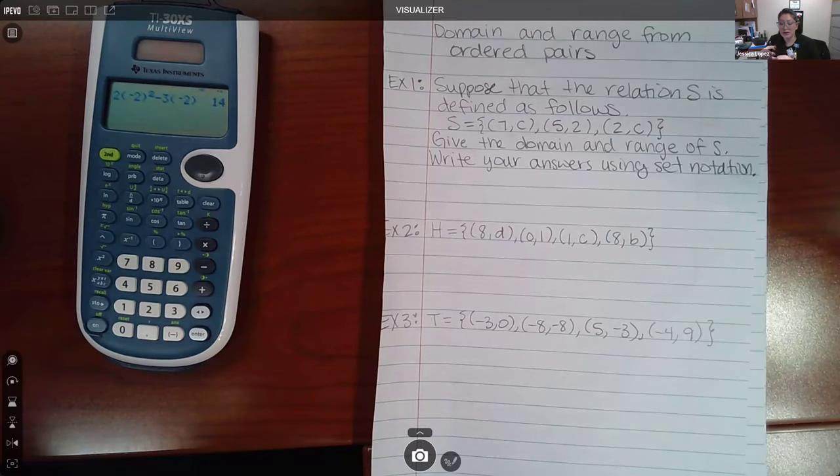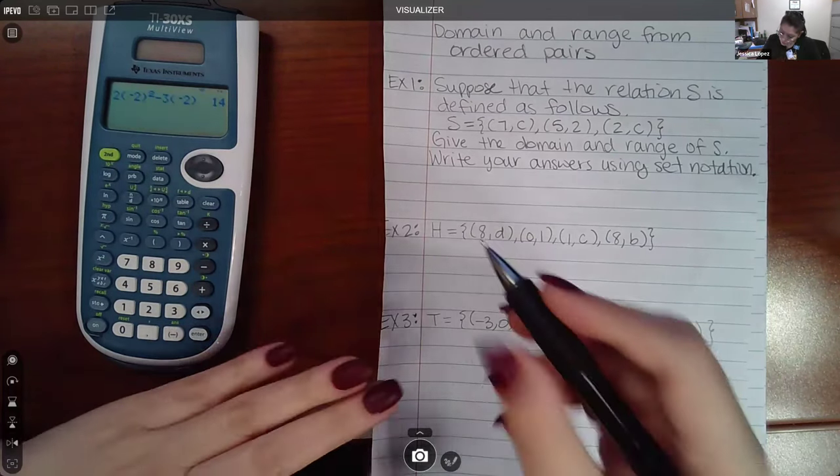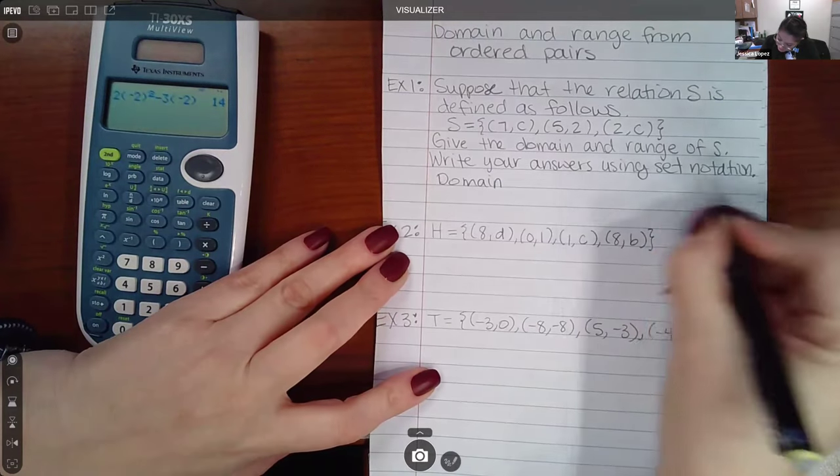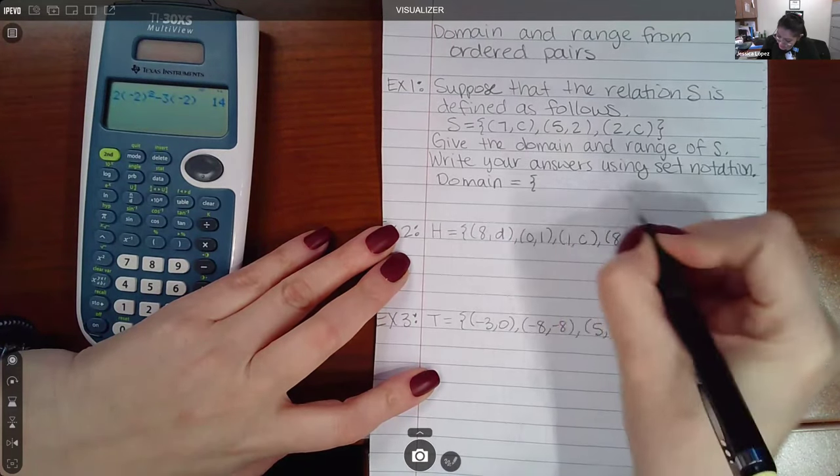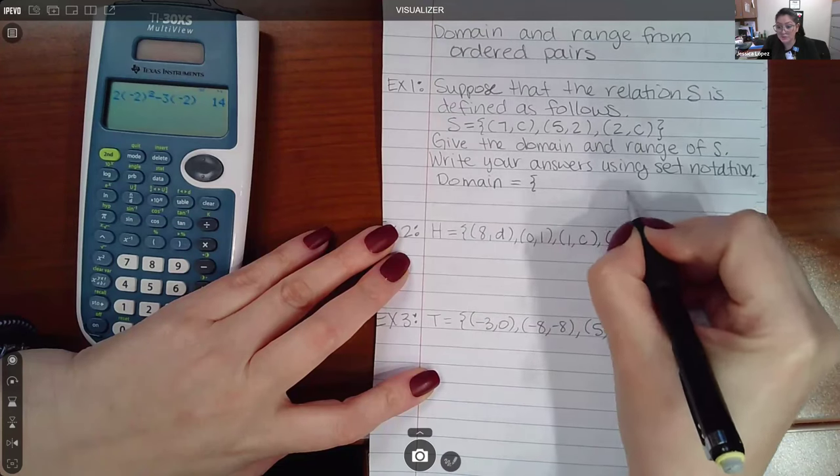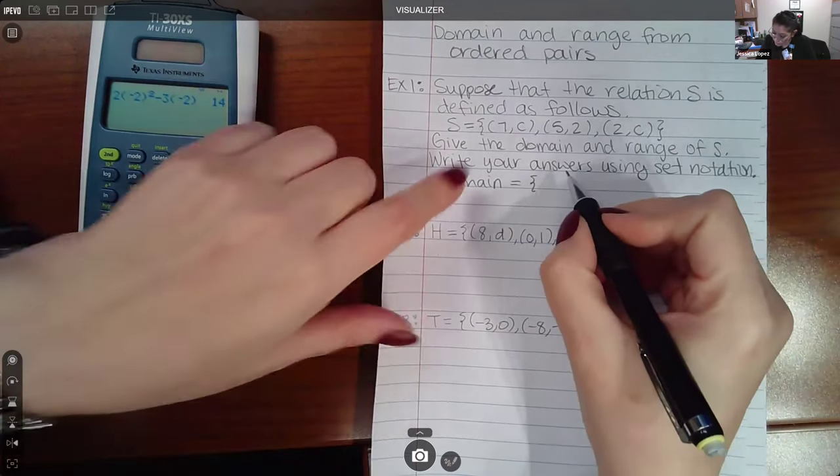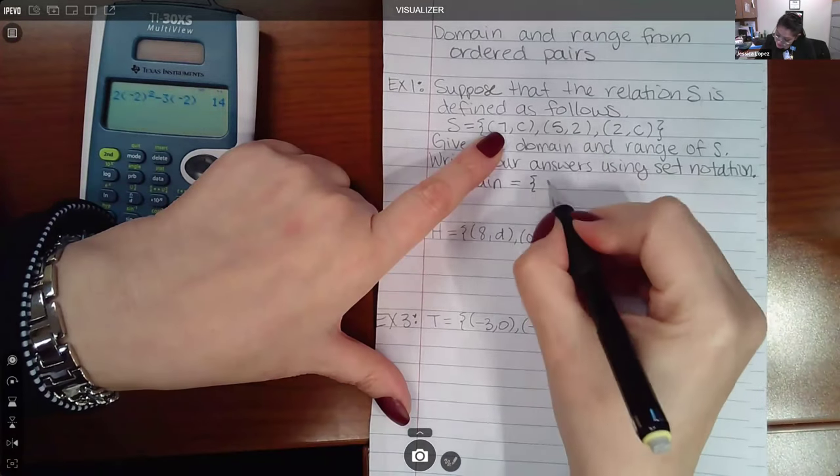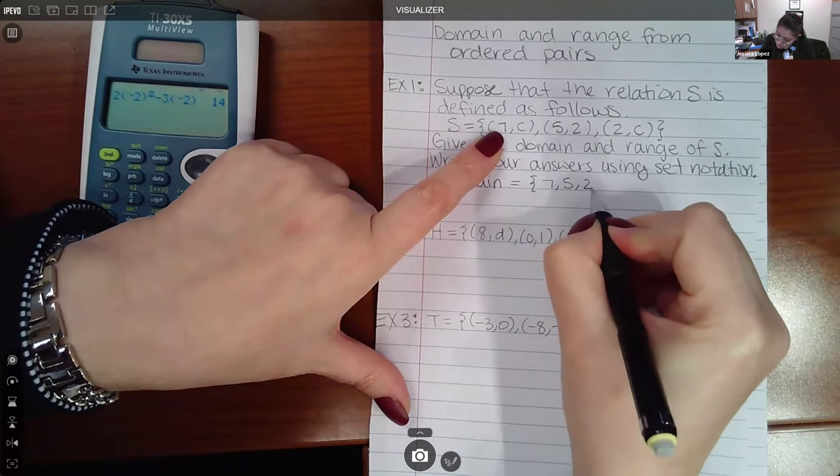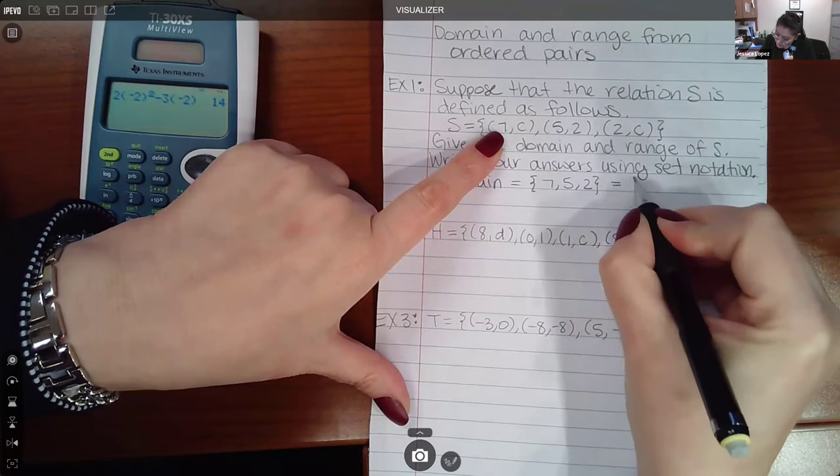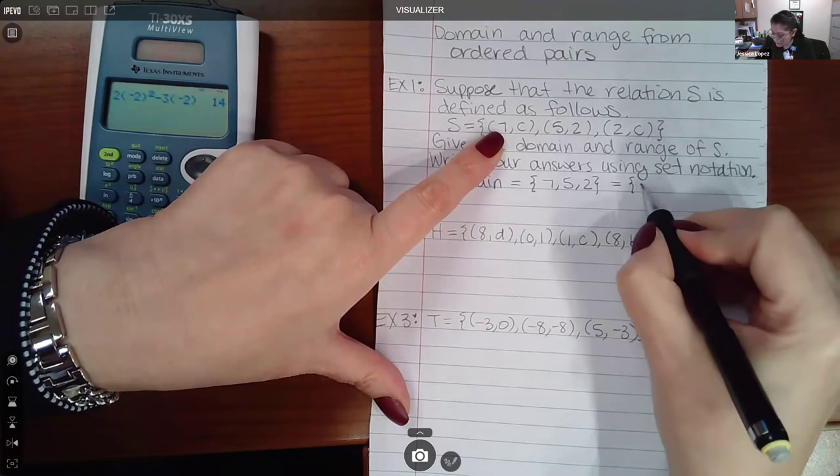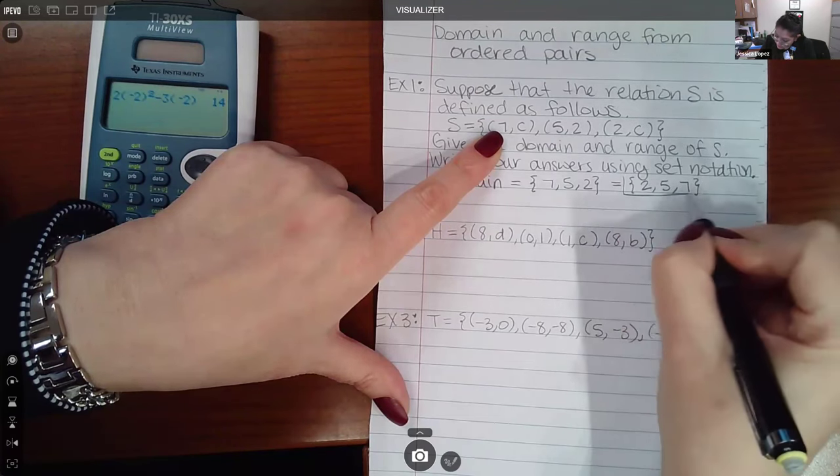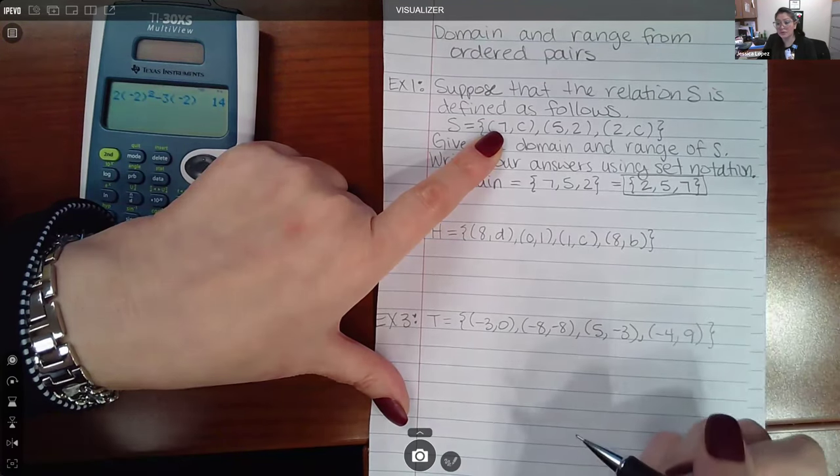For example one, when we're doing the domain, set notation means I need to use braces and then just list all the numbers and close the braces. Domain is always the first coordinates, so it's gonna be seven, five, two. Sometimes mathematicians like it to be in order, so then this would be the final answer there.